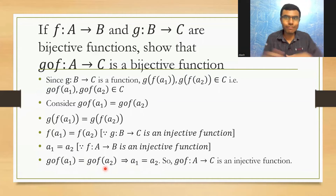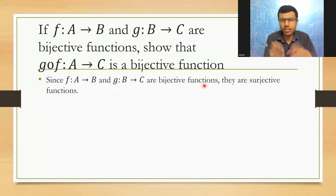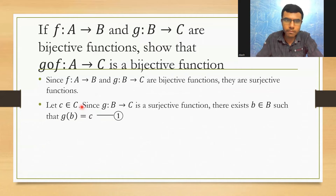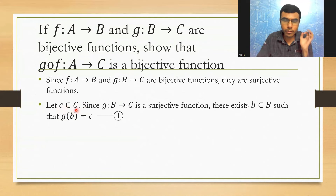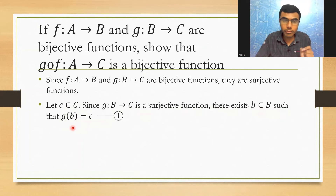Now let's proceed to part two. I need to show that g∘f:A→C is a surjective function. For that, I'm going to use the given condition. Since f:A→B and g:B→C are bijective functions, they are also surjective functions. Let there be an element c belonging to C. Since g:B→C is a surjective function, there exists b belonging to B such that g(b) = c — I'll mark this as equation (1).